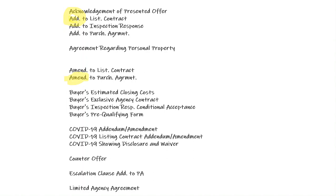We have an addendum to the listing contract, an addendum to our inspection response, and an addendum to a purchase agreement — there are many other addendums, I just did not pull them all in. If there's personal property that's going to be transferred, we have a separate agreement we could use outside of the purchase agreement.